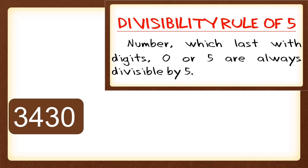The first number is 3430. According to the rule, we just look at the last digit. If it is 0 or 5, it is divisible by 5. In 3430, the last digit is 0. As stated in the rule, 3430 is divisible by 5 because it ends with 0.